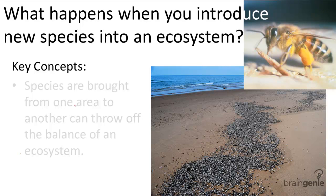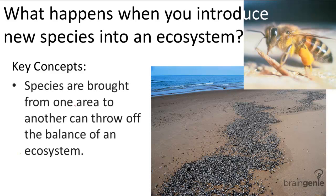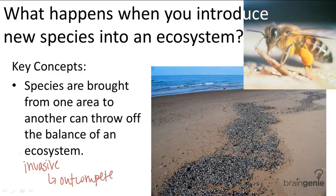We've talked a great deal about the delicate balance of ecosystems and how the alteration of even one part of a chemical cycle or one part of a food web can cause a huge domino effect. Introducing a new species is no exception, and when a non-native species is brought to a new area, there can be serious consequences. In the most extreme cases, new species can even become invasive, and that means they slowly start taking over by out-competing the native species and threatening native species' extinction.